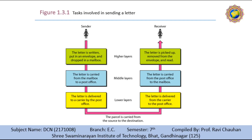On the way to the recipient's local post office, the letter may go through a central office and may be transported by truck, train, airplane, boat, or a combination of these. At the receiving side, in the lower layer, the courier transports the letter to the post office. In the middle layer, the letter is sorted and delivered to the recipient's mailbox. In the higher layer, the receiver picks up the letter, opens the envelope, and reads it.